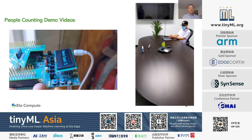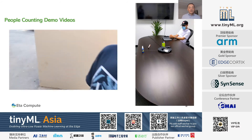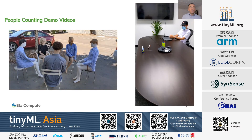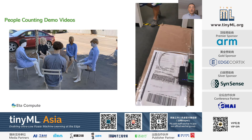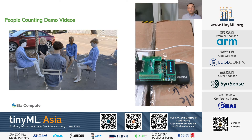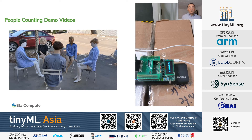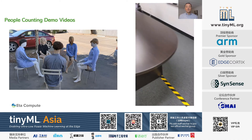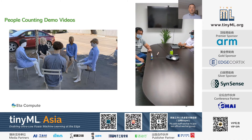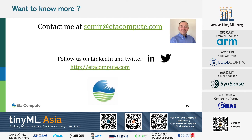Here are some real-life examples. On the left, we count people outdoors — we count 5 people, and there are indeed 5 people sitting. On the right side, there is 1 person in the room; we are counting 1 person, and there is 1 person about to enter the room, so soon the count will be 2. And now the count is 2 — yes, there are 2 people in the room. If you want to know more, contact me at samir@etacompute.com. I also invite you to visit our website and follow us on Twitter and LinkedIn. Thank you.